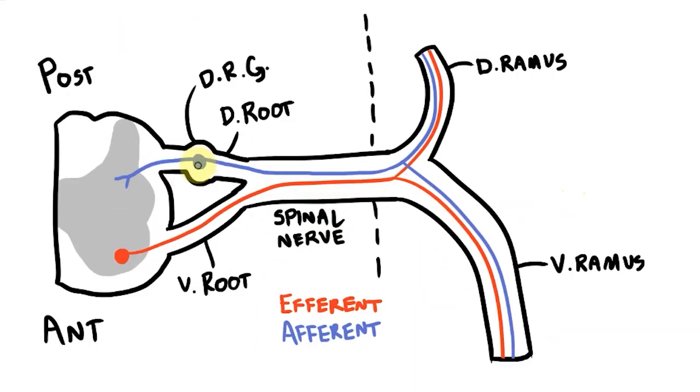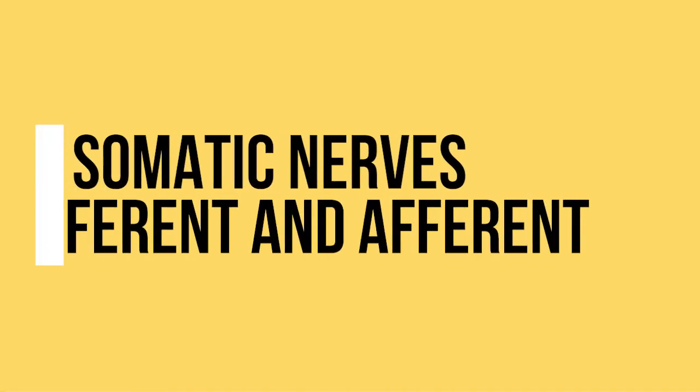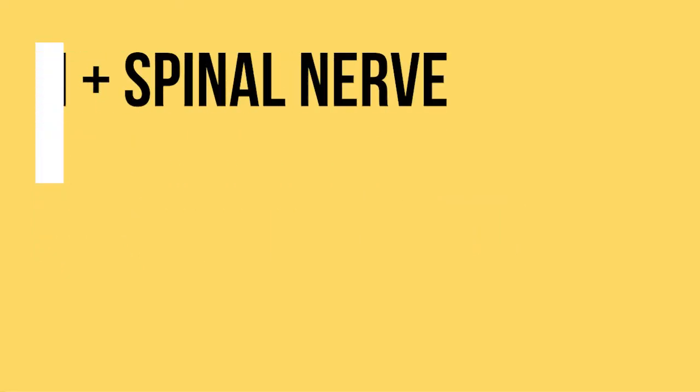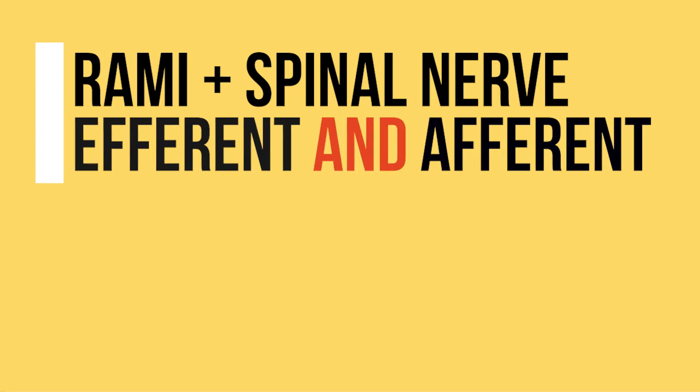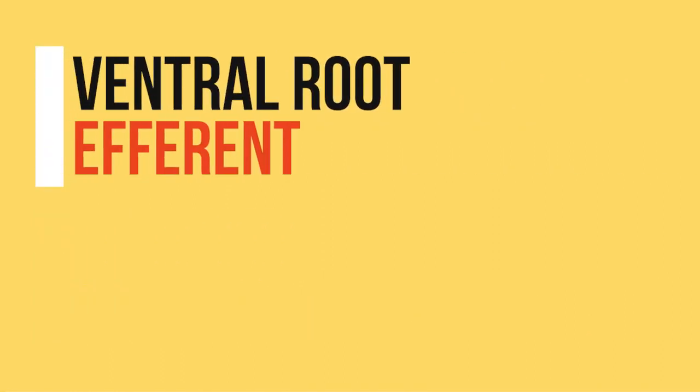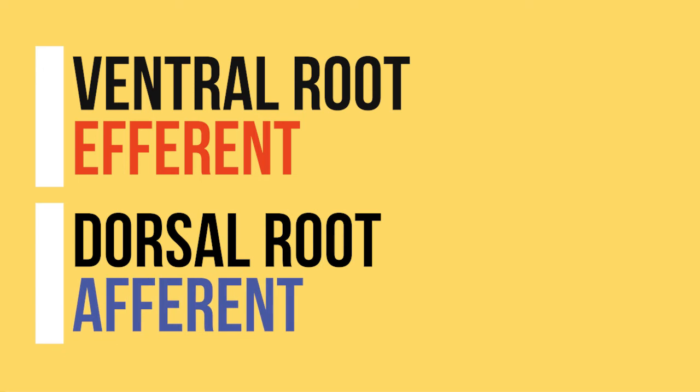So that's how the somatic nerve fibers travel within the nerve. Let's review the major points of what we've drawn. The somatic nerves are divided into efferent motor fibers and afferent sensory fibers. The rami and spinal nerves contain a mix of efferent and afferent fibers but the roots only contain one or the other. The ventral root contains efferent fibers and the dorsal root contains afferent fibers.